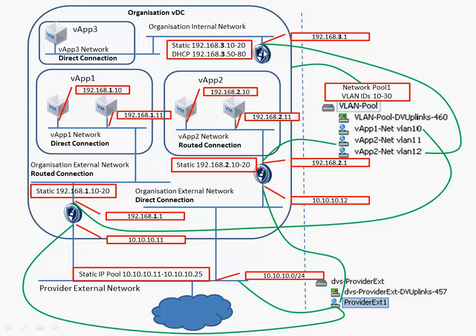In this case we do have to deploy a vShield Edge device, which is done automatically by the vShield Manager connected to your vCenter server, but it is not connected to the outside world. The IP address configured on a machine using DHCP is 192.168.3.50.